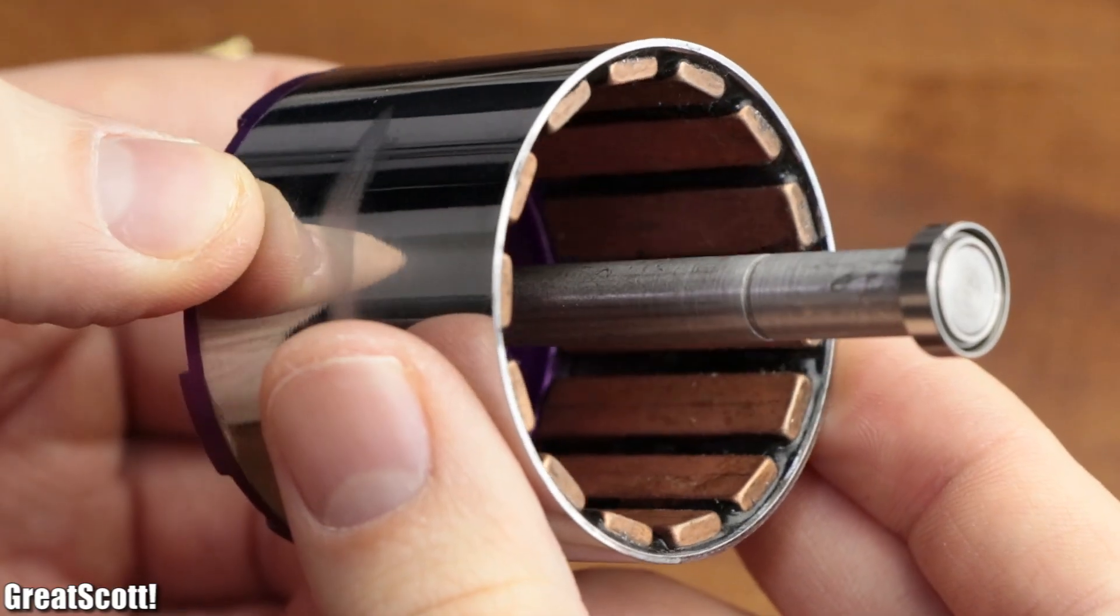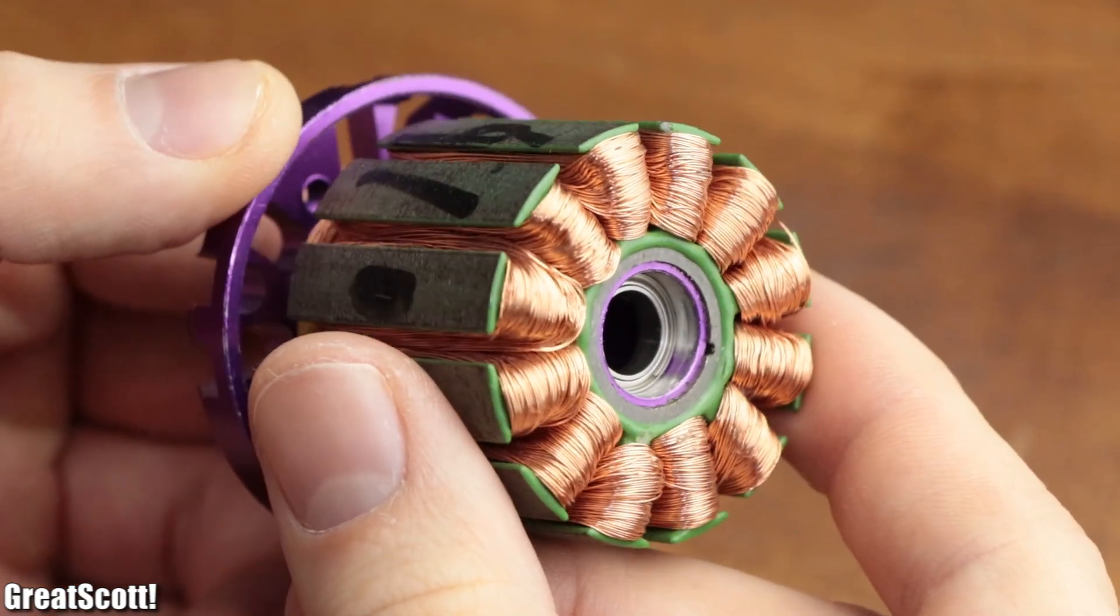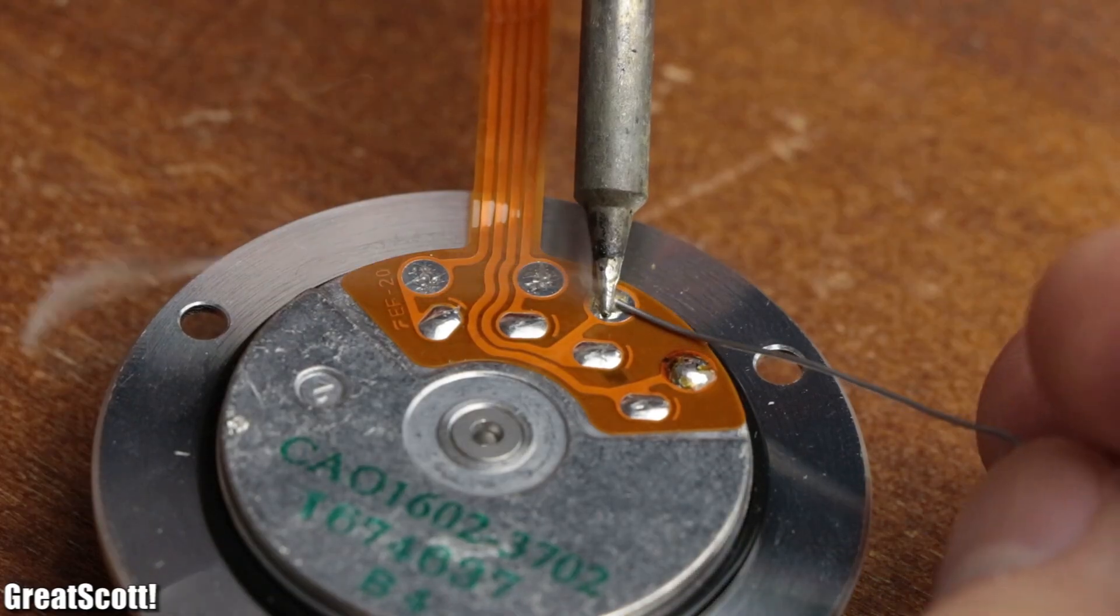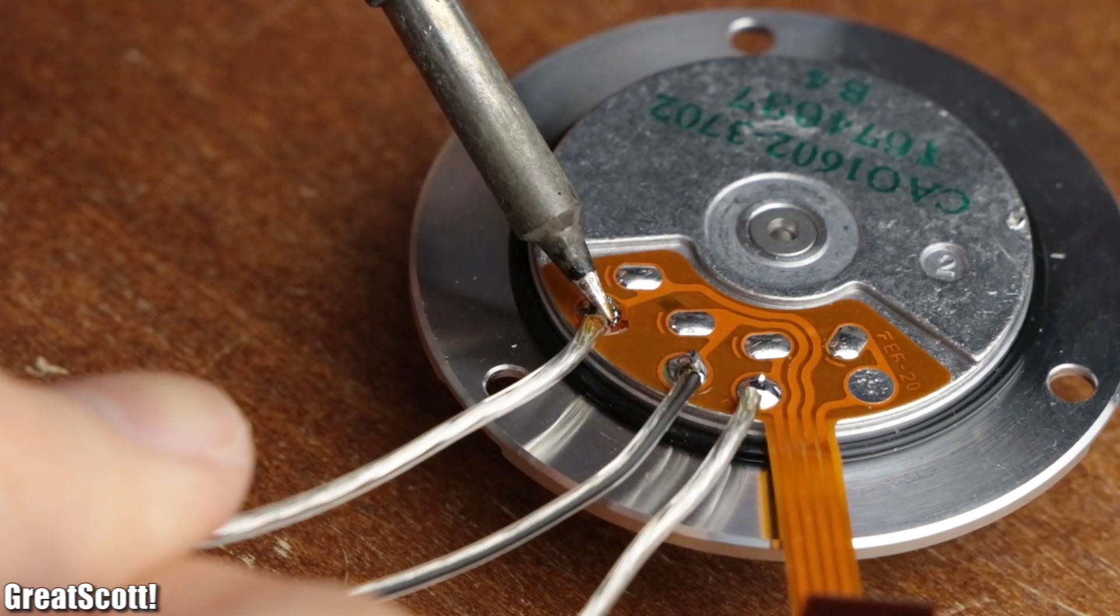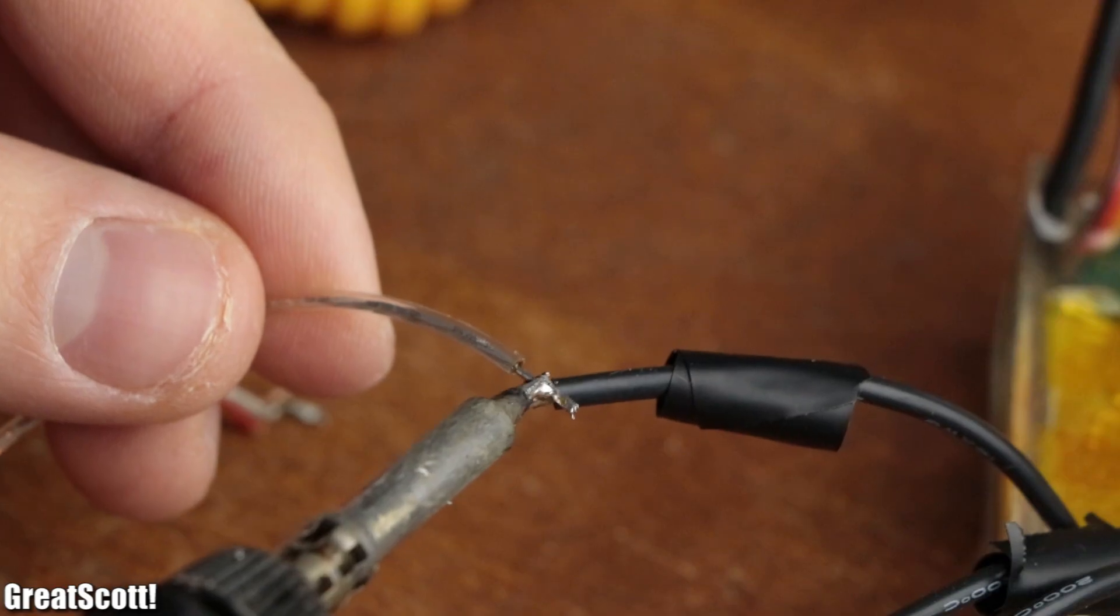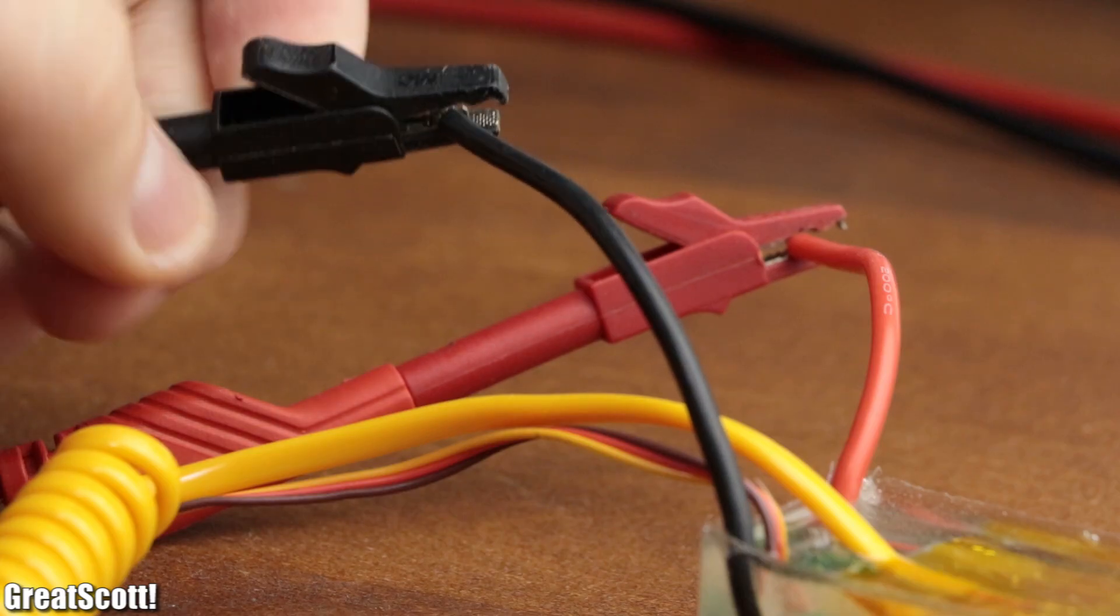This structure is almost identical to that of a BLDC motor. So to confirm my assumption I hooked up an ESC to the three phases of the motor, not including the star point, and powered it all up.